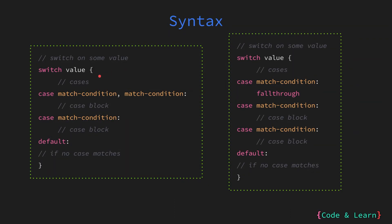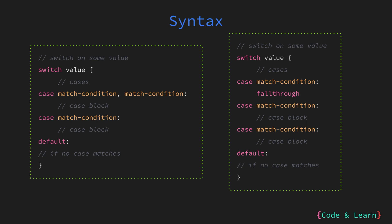Here we have an example of a multiple case statement. You can see we are switching on a value and inside the case block we have multiple conditions to switch upon. So this particular case block will match multiple conditions and execute the same case block for them. In the second example, we are using fallthrough. We are switching on the value, and if it matches this condition, we perform the code inside the case block and at the end of it we fall through, which means the next code block will also be executed. I would highly recommend not using the fallthrough statement because it makes the code confusing.